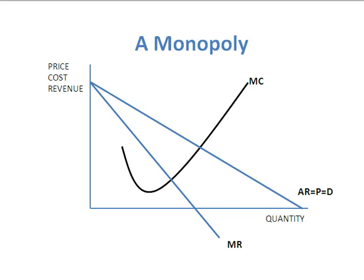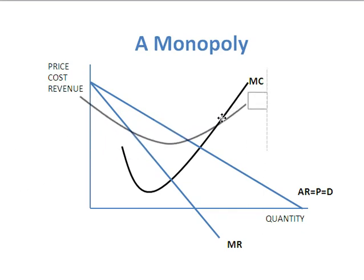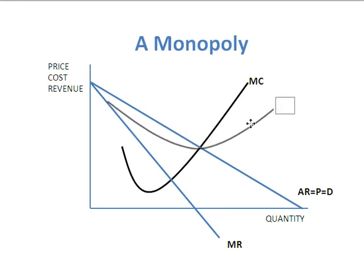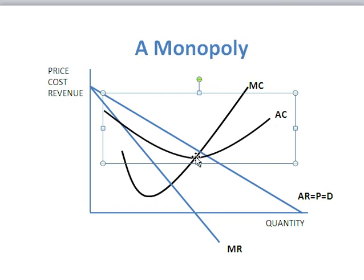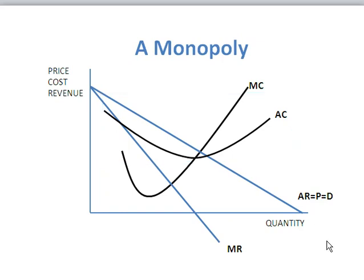I just want to show you guys a monopoly situation, and in this case it's going to be a monopolist making a super-normal profit. The first thing I need to do is add an average cost curve. The average cost curve has to cut the MC curve at its minimum, so you can see the AC curve has come down and cut the marginal cost curve at its minimum.